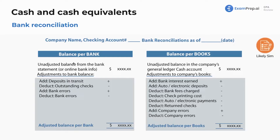This side has a lot less items because the bank is the one actually holding the money. So you're going to add deposits in transit, because the bank doesn't know about deposits in transit generally — once they hit the bank account it knows, but you want to add those to the balance for the bank. Outstanding checks: the bank doesn't know that someone has a check from you until they deposit it themselves, so you're going to deduct outstanding checks because the bank doesn't know about it.